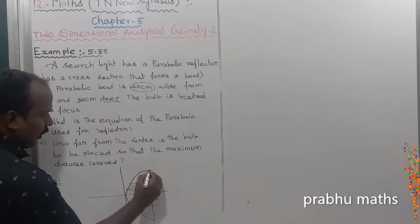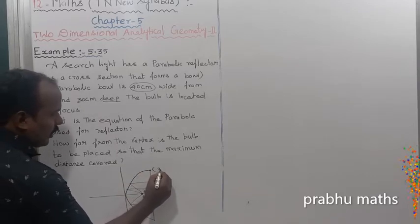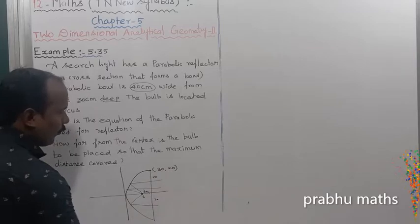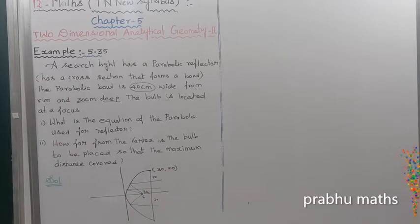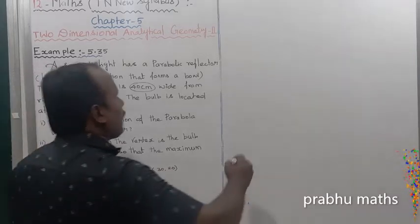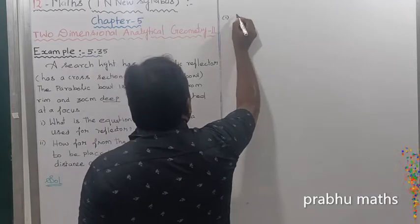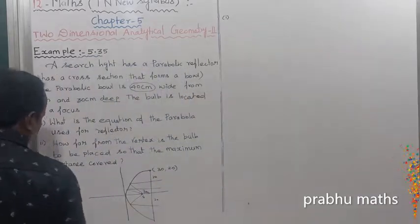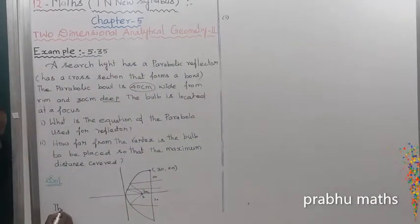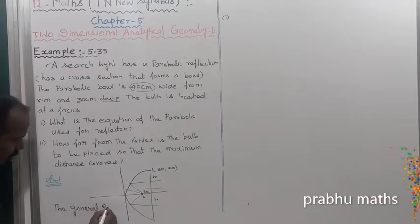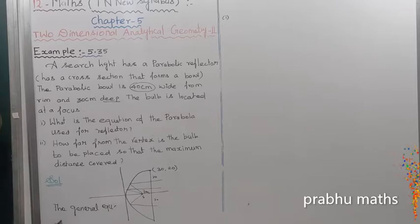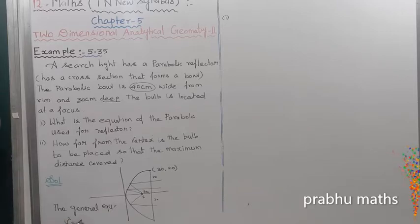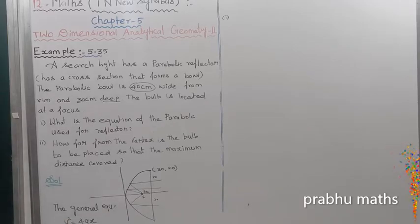The distance at the top is 40 cm. The general equation is y squared is equal to 4Ax.